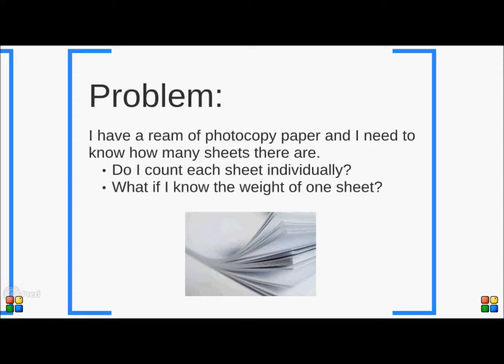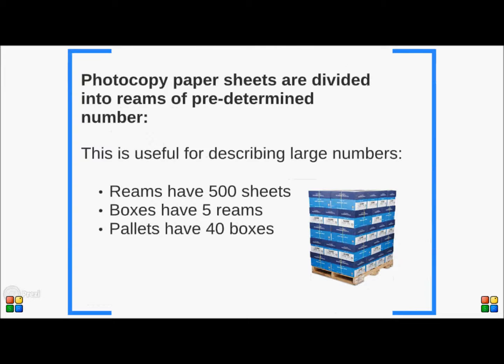But if I knew the weight of a single piece of paper, then I could weigh the pile, divide by the weight of a single piece of paper, and then I would know exactly how many sheets there were. The people that make photocopy paper have helped us out a bit — they've already divided paper into known quantities. These are known as reams, which have 500 sheets; boxes, which contain 5 reams; and pallets that have 40 boxes. So instead of asking for 100,000 sheets of paper, I can ask for one pallet, and still get the exact amount that I'm after.